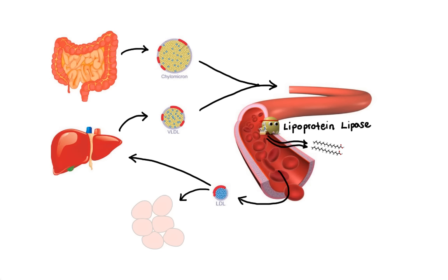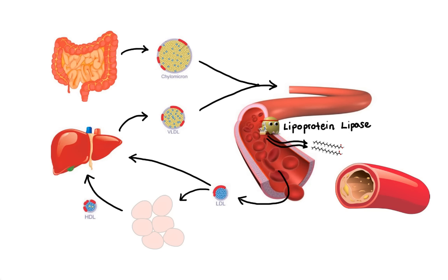Excess cholesterol from the peripheral cells is transported back to the liver by HDL. HDL is composed mainly of protein with a small amount of lipids, and it is produced in the liver and small intestine. The problem arises when we have abnormally high levels of LDL cholesterol, which can accumulate in the innermost layer of the artery wall and lead to formation of atherosclerotic lesions — this is why LDL is often referred to as bad cholesterol. HDL, on the other hand, prevents formation of atherosclerotic lesions by removing cholesterol as well as suppressing LDL oxidation and vascular inflammation, which is why it's referred to as good cholesterol. Abnormally low levels of HDL can also contribute to atherosclerosis.